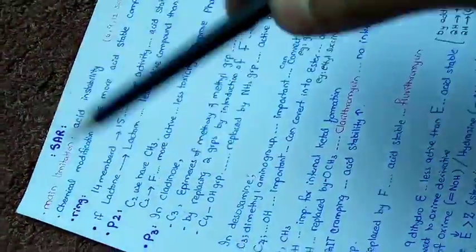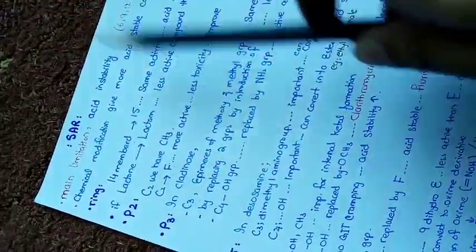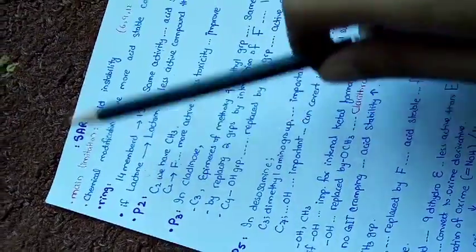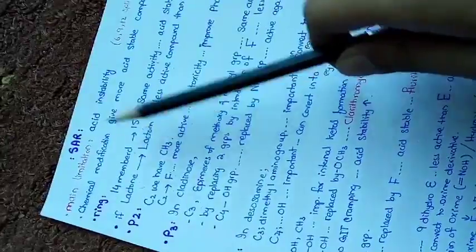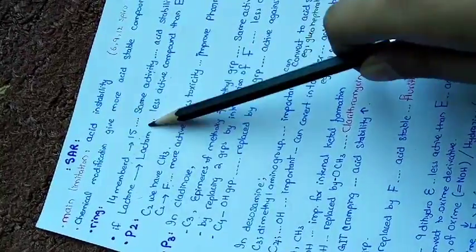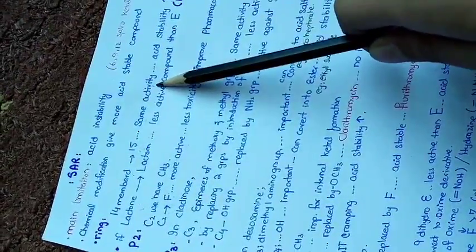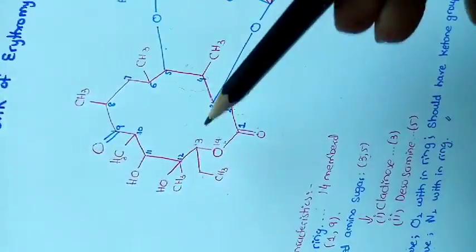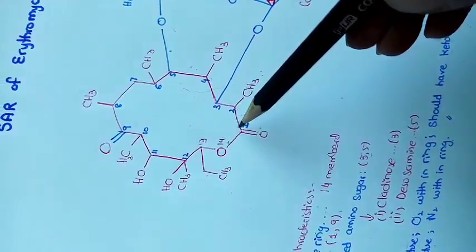If this 14-membered lactone ring is converted into a 15-membered ring, we will get a compound with the same activity but increased acid stability.